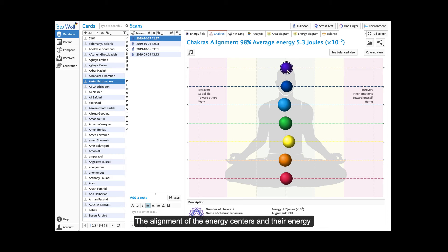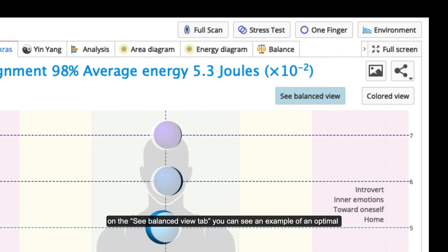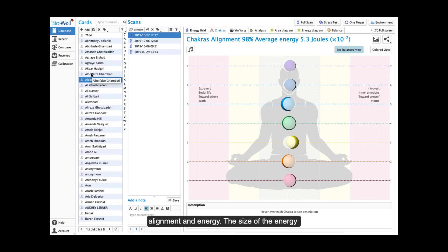The alignment of the energy centers and their energy is of importance in this section. By clicking on the see balance view tab you can see an example of an optimal alignment and energy.